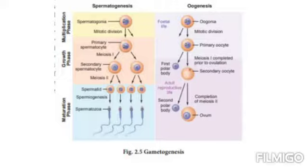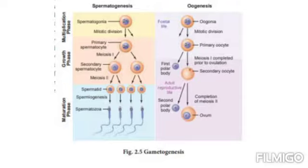Some hormones are also involved in the process of spermatogenesis. Spermatogenesis starts at the age of puberty and is initiated due to the increase in the release of gonadotropin-releasing hormone by the hypothalamus. This gonadotropin-releasing hormone acts on the anterior pituitary gland and stimulates the secretion of two gonadotropins.